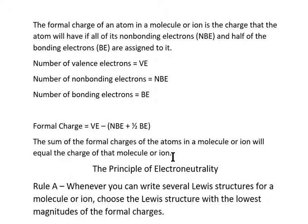Let's look at the concept of formal charge. The formal charge of an atom in a molecule or ion is the charge that the atom would have if all of its non-bonding electrons and half of its bonding electrons are assigned to it. We designate the number of valence electrons as VE, the number of non-bonding electrons as NBE, and the number of bonding electrons as BE.